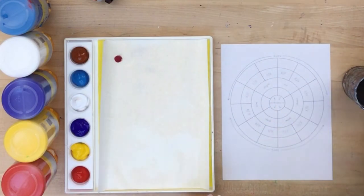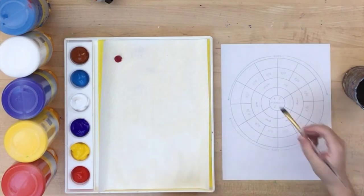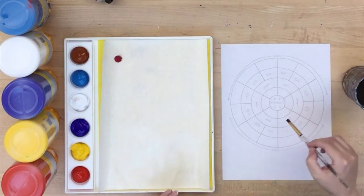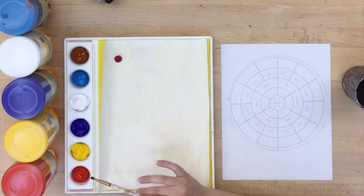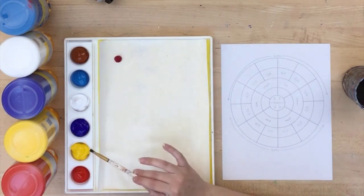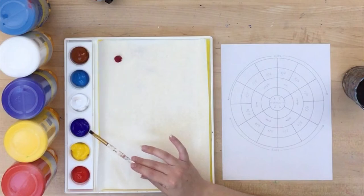So to start you're simply going to fill in your primary colors on the color wheel with the colors from your palette. Your three primary colors are the cadmium red, cadmium yellow, and ultramarine blue.